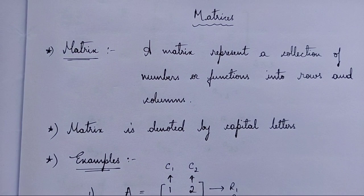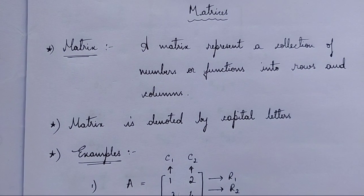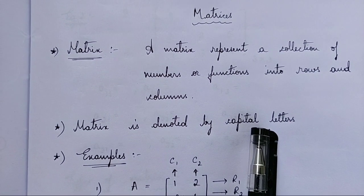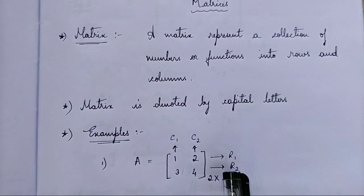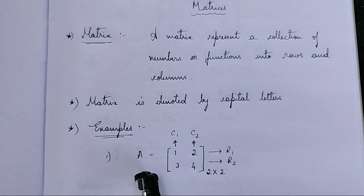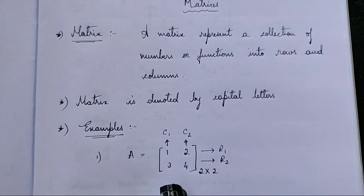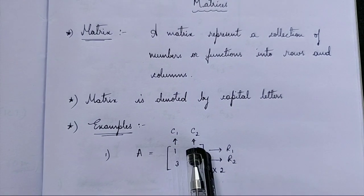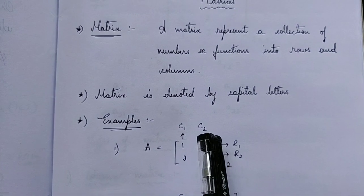You have come across matrices topics in your second PUC. So a matrix is denoted by capital English alphabet letters. A matrix is a construction where you denote numbers or functions in such a way that there are many rows as well as columns.